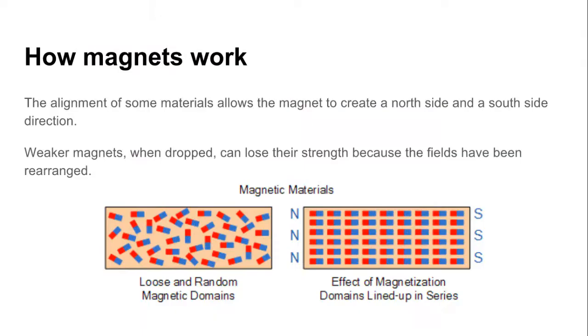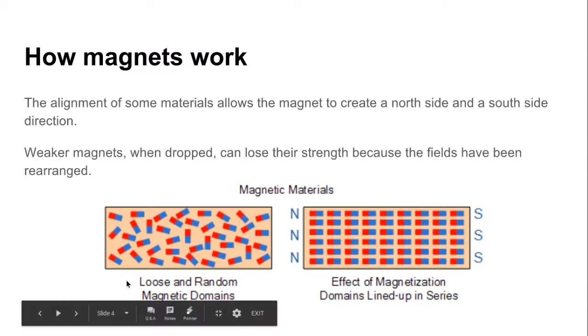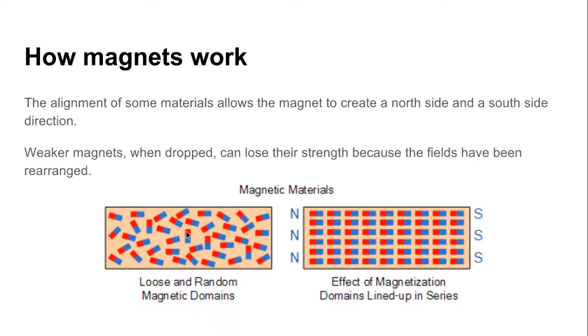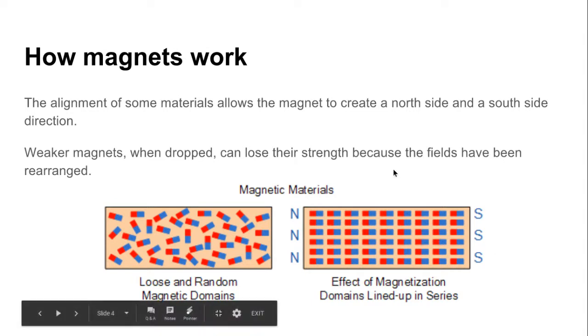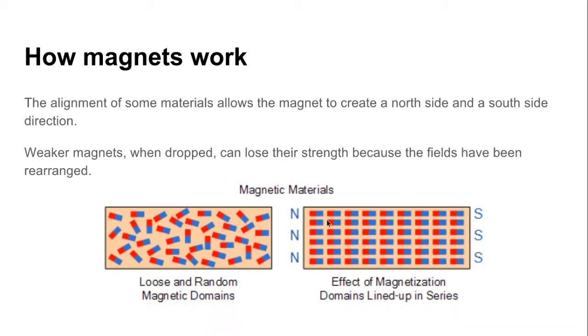So the atoms within the material that you're working with, if they are lined up to where their north and south poles are perfectly aligned like in the picture on the right, then all of those charges will add up and make that a pretty good magnet.